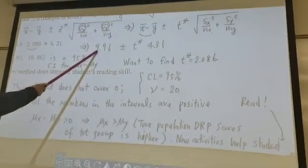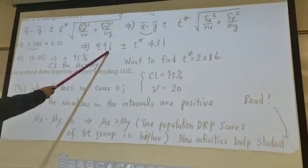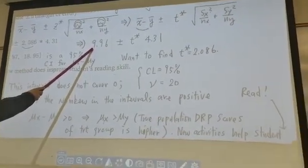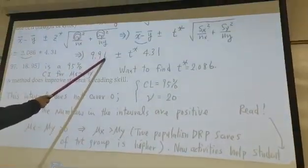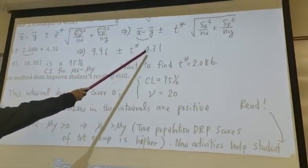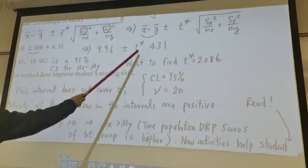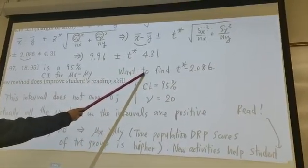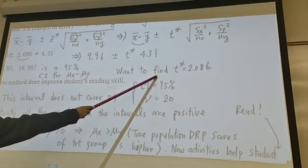Up to here, we find x bar minus y bar. The observed difference between x bar and y bar is 9.96 plus or minus critical t value times 4.31. So our next job is to find the t star, the critical t value from the table.